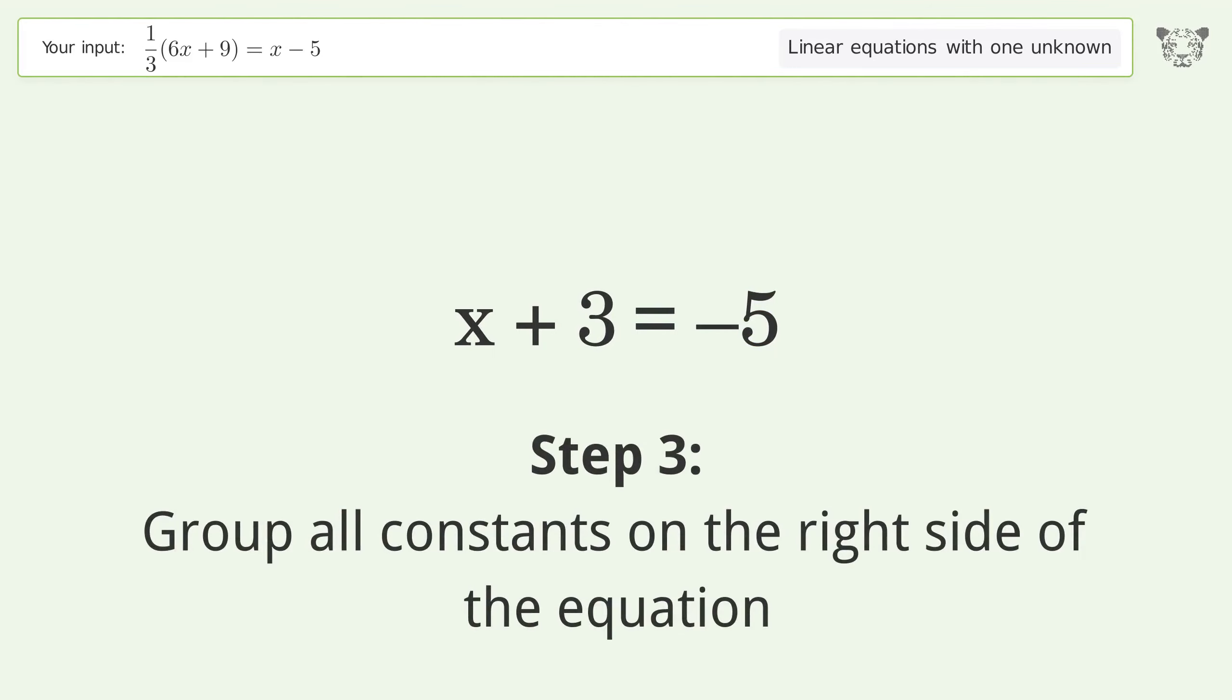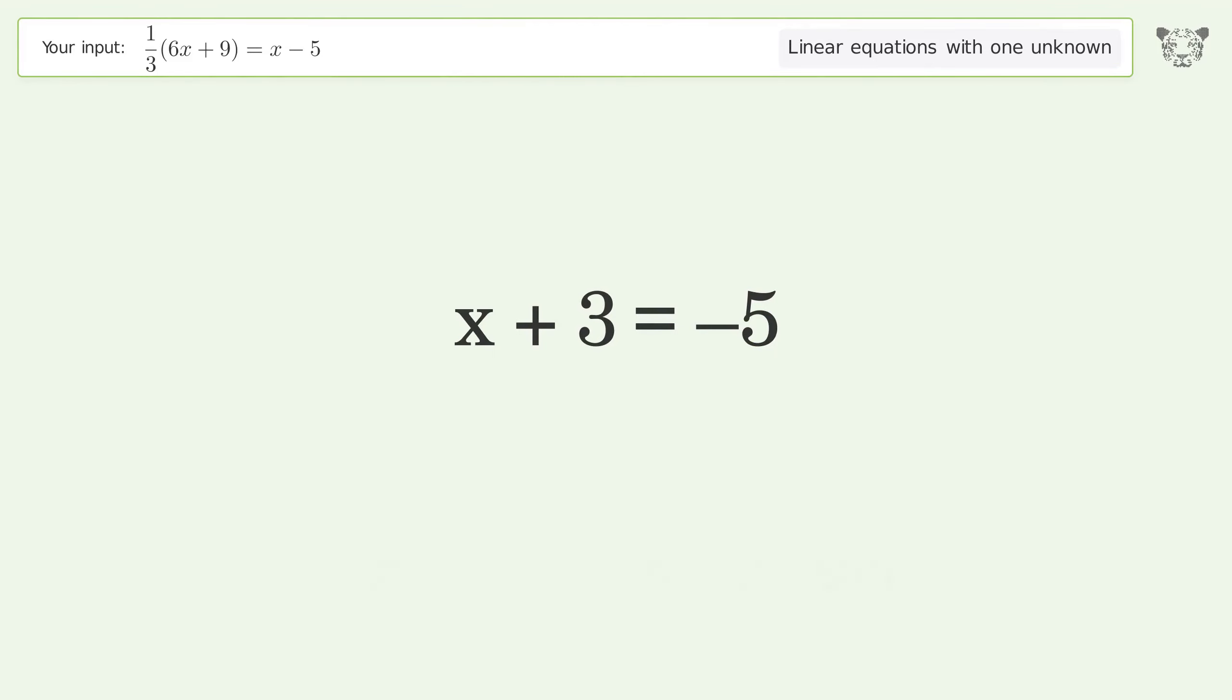Group all constants on the right side of the equation. Subtract 3 from both sides. Simplify the arithmetic.